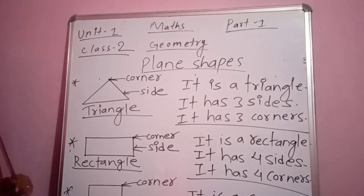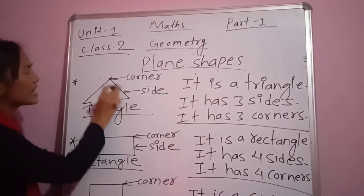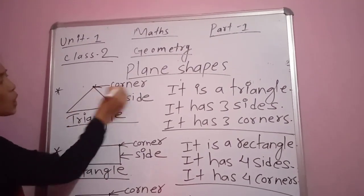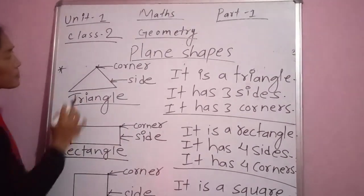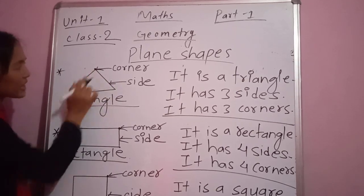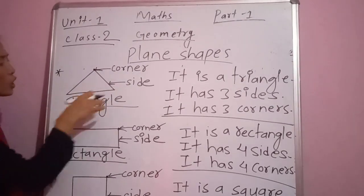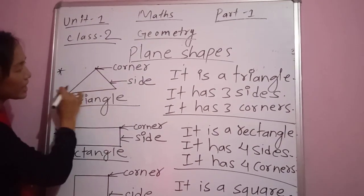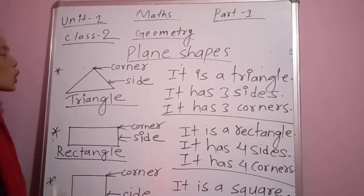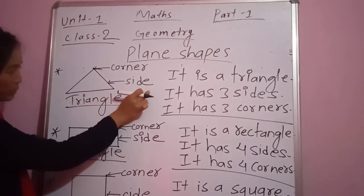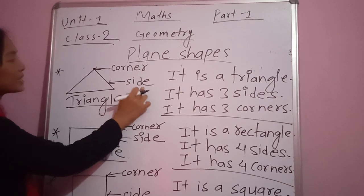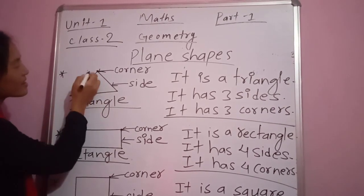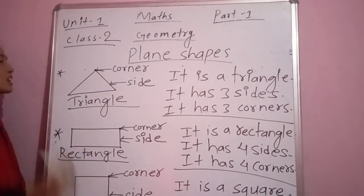I have labeled its parts. Look here — I have marked the point where these two lines meet. This point where two lines meet is called the corner — C-O-R-N-E-R. There are other corners also where two line segments meet. Here is also one corner where these two line segments meet. All together, this triangle has three corners. Likewise, I have labeled this part as a side — S-I-D-E. In this figure, there are altogether three lines: one, two, three. So, all together, this triangle has three sides.